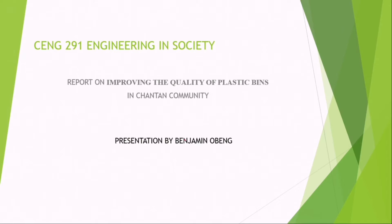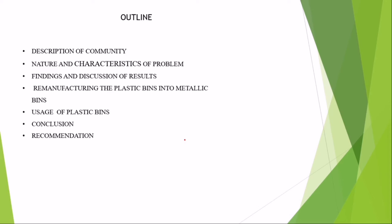Then, presentation by Benjamin O'Bain — that's a friend of mine. Then you go to the next page, which is the outline. The outline includes: description of community, nature, encountering the problem, findings and discussion of results. Depending on your project, you may also have manufacturing plastic beans into metallic beans, usage of plastic beans, and conclusion and recommendation.